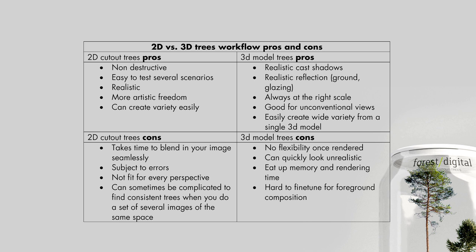There are a couple of cons for 2D cutouts to take into account. The main one is the time it takes to blend your cutout inside your image seamlessly — this is an extra step you won't have with 3D, although once you optimize your workflow it can be quite easy. It is also subject to errors: you don't know exactly what size your tree is or where it is in your image, so you can easily end up with an oversized tree somewhere. You can also sometimes forget to reflect it properly in windows.